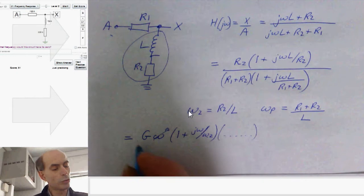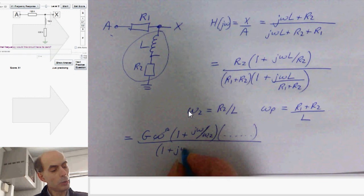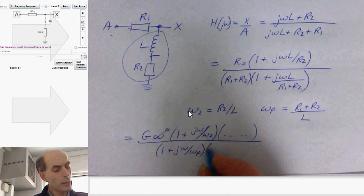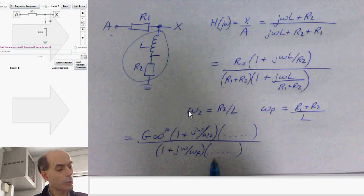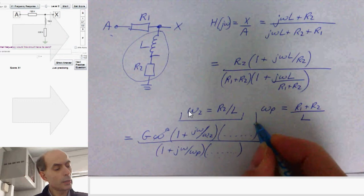Down here, we would have 1 plus J omega over omega P. And that's the angular frequency of the pole. And if there were more poles, we would have more of these terms here. But in this case, we don't. We've just got a zero at R2 over L, and a pole at R1 plus R2 over L.